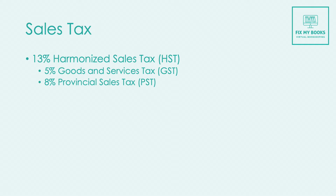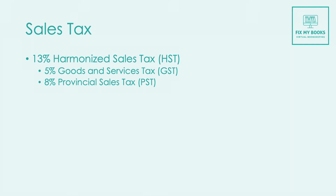In other provinces like BC, taxes are remitted to two different government bodies. The Provincial Sales Tax (PST) would be remitted to the BC Ministry of Finance, and the GST would be remitted to the federal government. But Ontario is different — it has a Harmonized Sales Tax, so both the provincial and goods and services taxes are remitted to the Canada Revenue Agency, which is the federal tax agency.